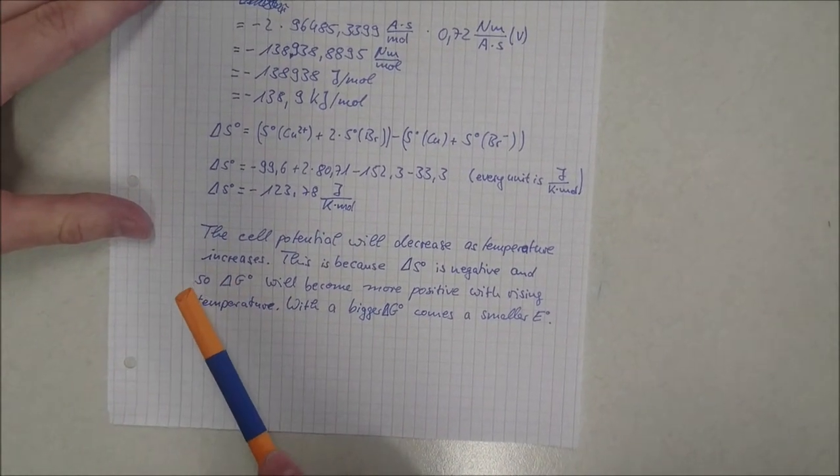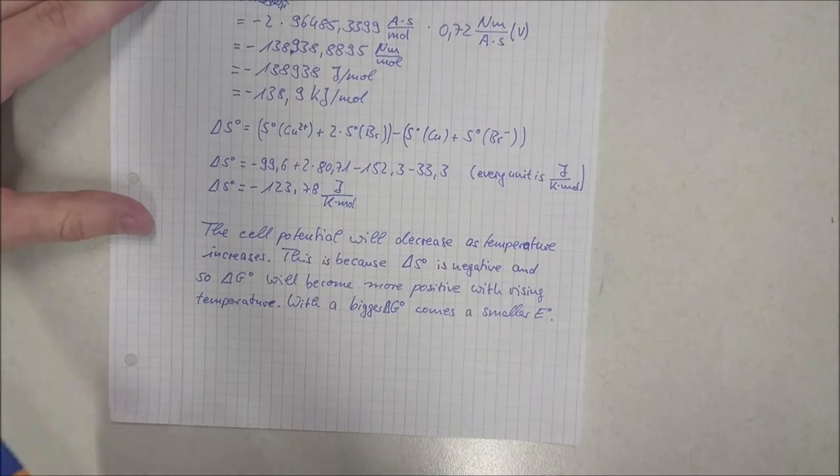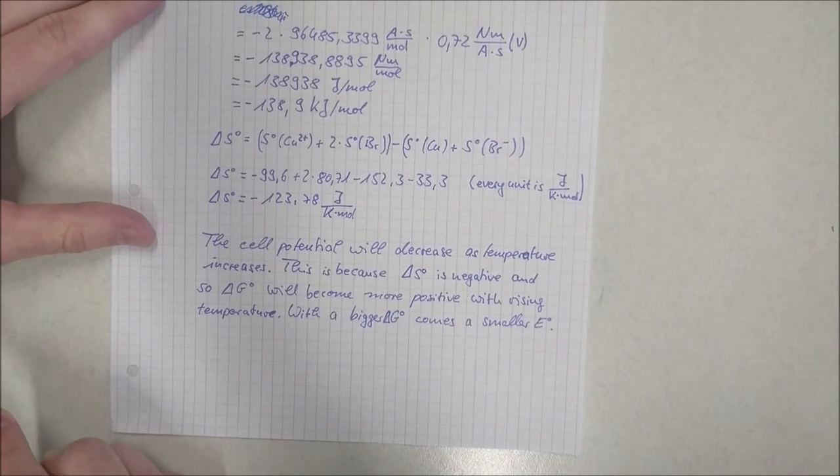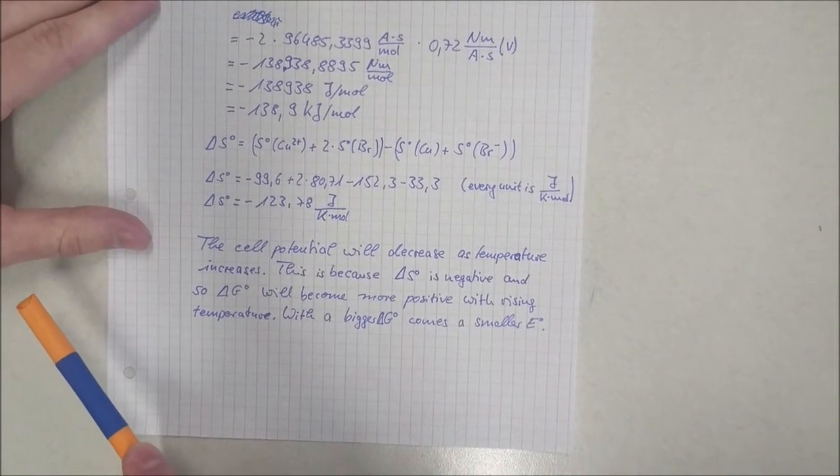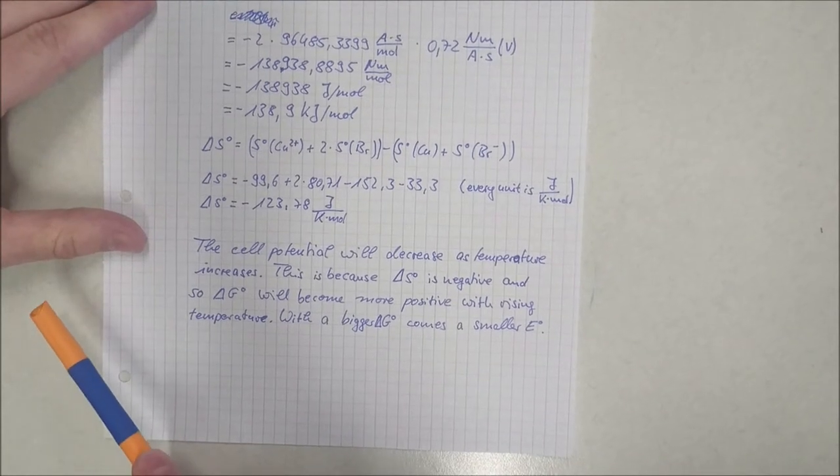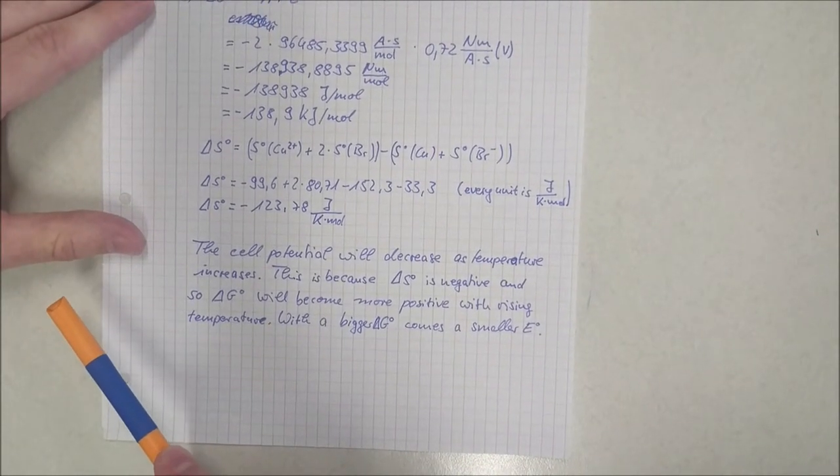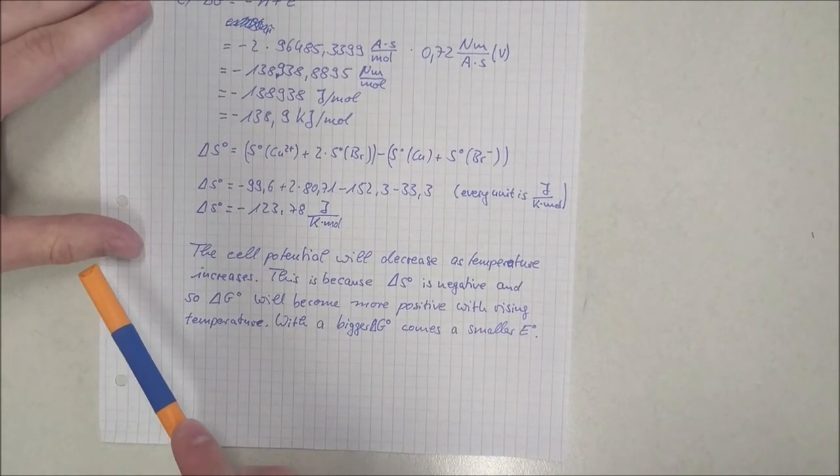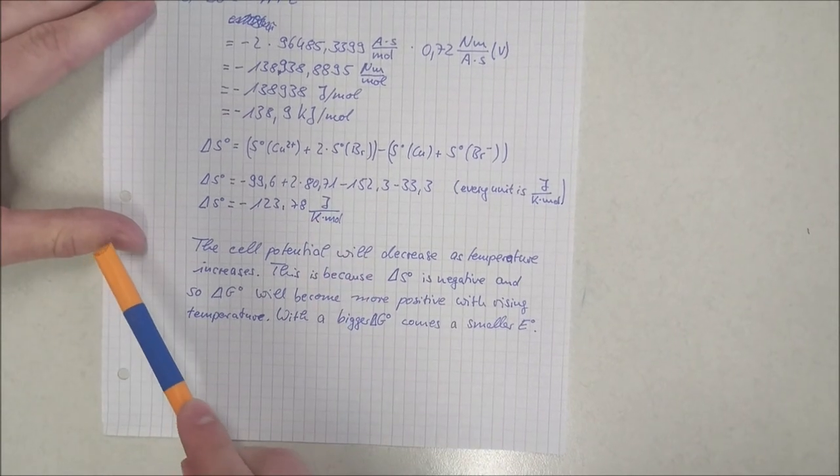From this, you can see the cell potential will decrease as temperature increases. This is because delta S is negative, so delta G will become more positive with rising temperature. With a larger delta G comes a smaller E.